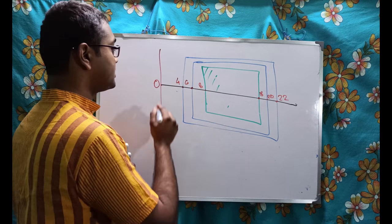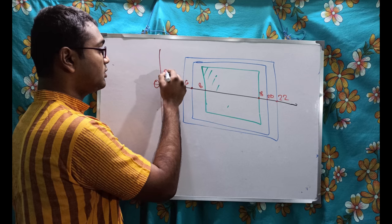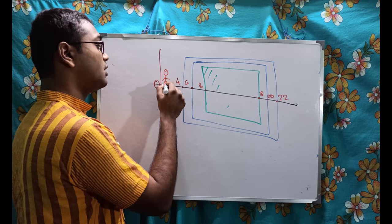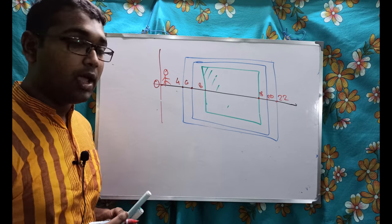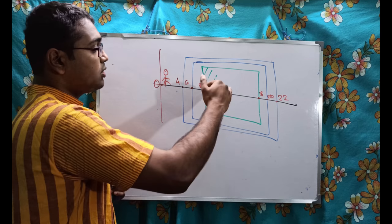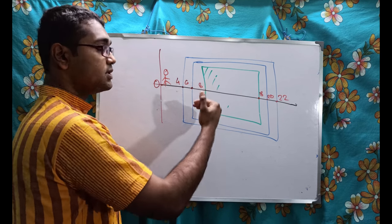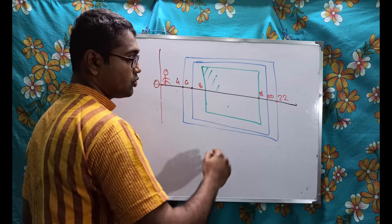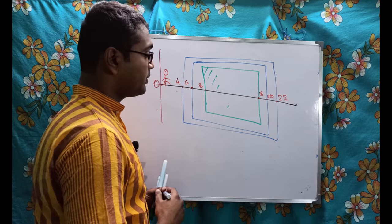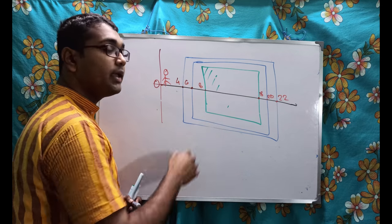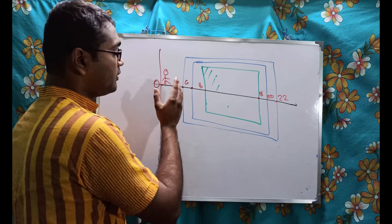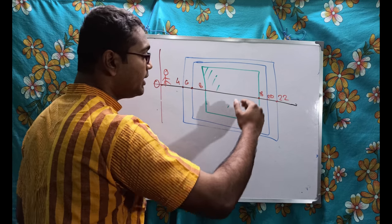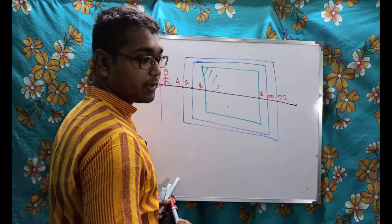So when he is walking, he will find 4 first, then 6, then 8, and then he will enter into the property. Now as long as he is inside this property, he is inside the set. Imagine I am saying this 8 to 18 as my set S. I am saying them as my set S.